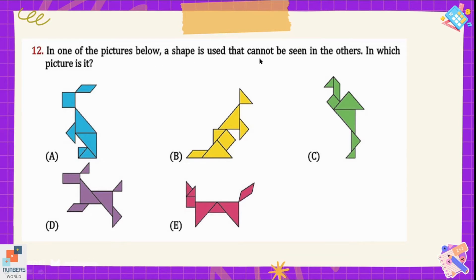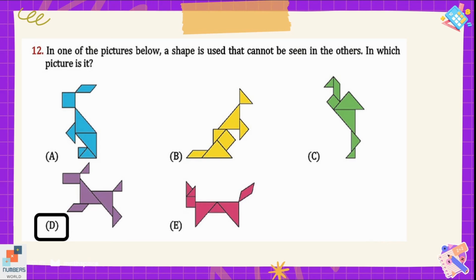Question number twelve: in one of the pictures below, a shape is used that cannot be seen in the others — in which picture is it? Let's find the square shape across all five options. There is a square in the rabbit, the kangaroo, the flamingo, and the cat. But in the dog there is no square — it appears to be replaced with a rectangle. So option D is the correct answer: the shape that cannot be seen in the other pictures is the rectangle, which appears only in option D.